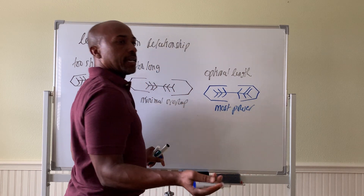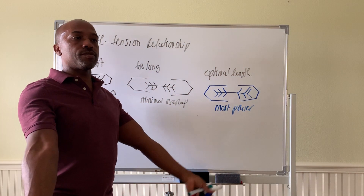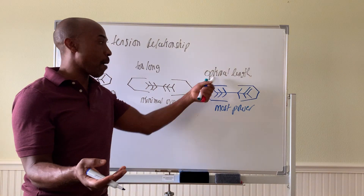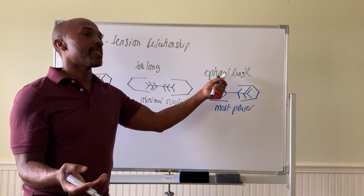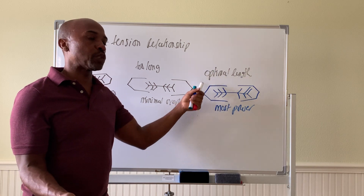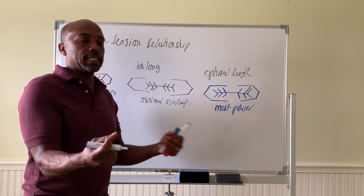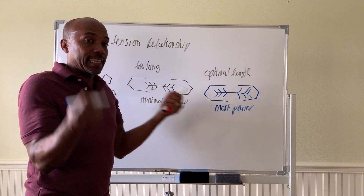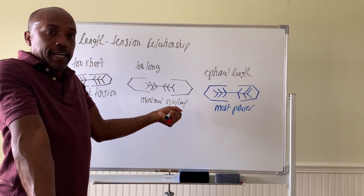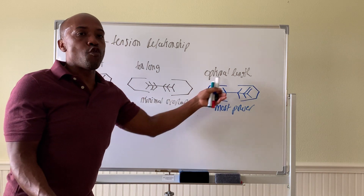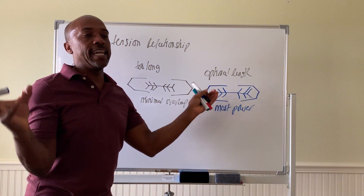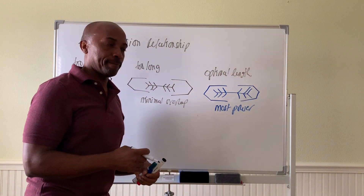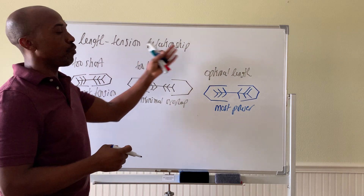Interestingly, when we relax our limbs normally they are resting at the proper optimal length that allows for maximal force. This is why your elbow is not fully extended or fully flexed when you're resting — it must be optimally resting so you can form the most cross bridges and have the most distance to create enough power. That's your length-tension relationship.